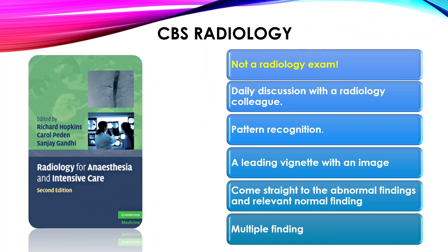For the second CBS station — radiology — please bear in mind that this is not a radiology exam. The expectation is to evaluate whether the candidate can diagnose any pathology on radiology that requires urgent intervention. The best book to practice cases is 'Radiology for Anaesthesia and Intensive Care.' The best way to practice this station is daily discussion of important radiological findings of your patients with your radiologist. A leading vignette with an image is usually given — try to think about the expected finding by reading the vignette first before looking at the image. In some vignettes, the examiner won't give you any hint, so the only thing to help you will be the image.